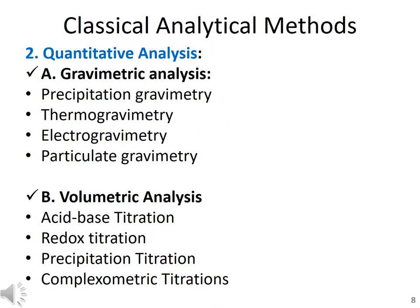After identification of elements in the sample, their quantitation is required. To perform quantitative analysis, there are two major categories: gravimetric analysis and volumetric analysis. In gravimetric analysis, you can perform precipitation gravimetry, thermogravimetric analysis, electrogravimetric analysis, and particulate gravimetric analysis.